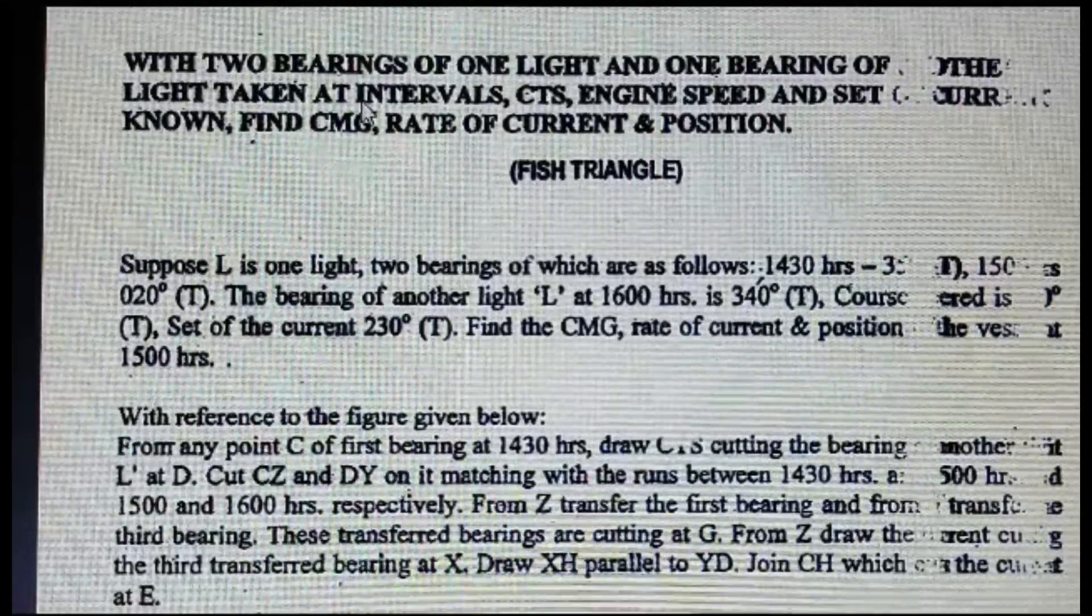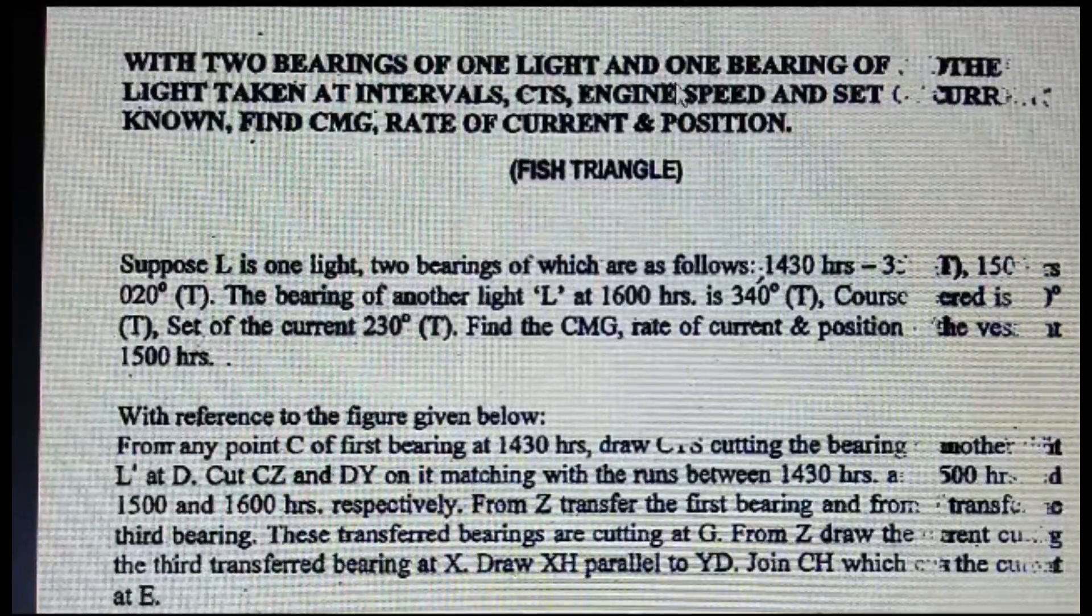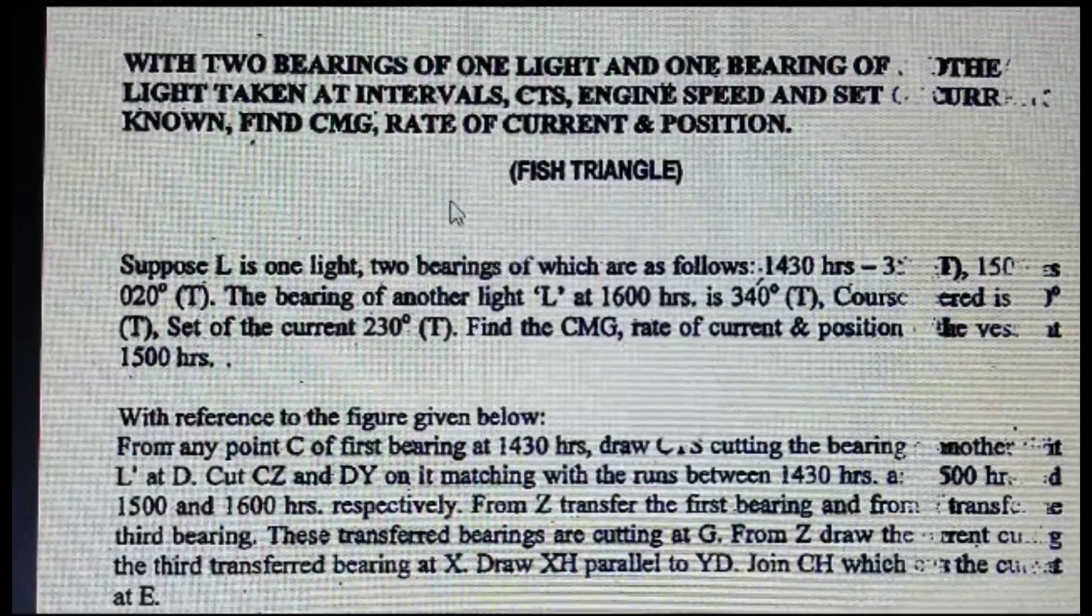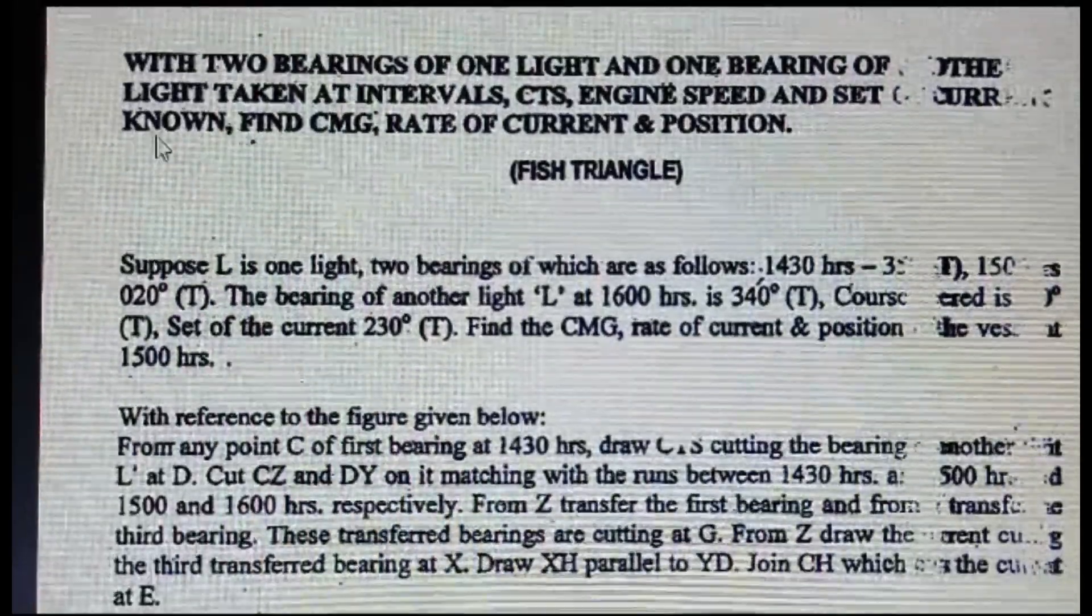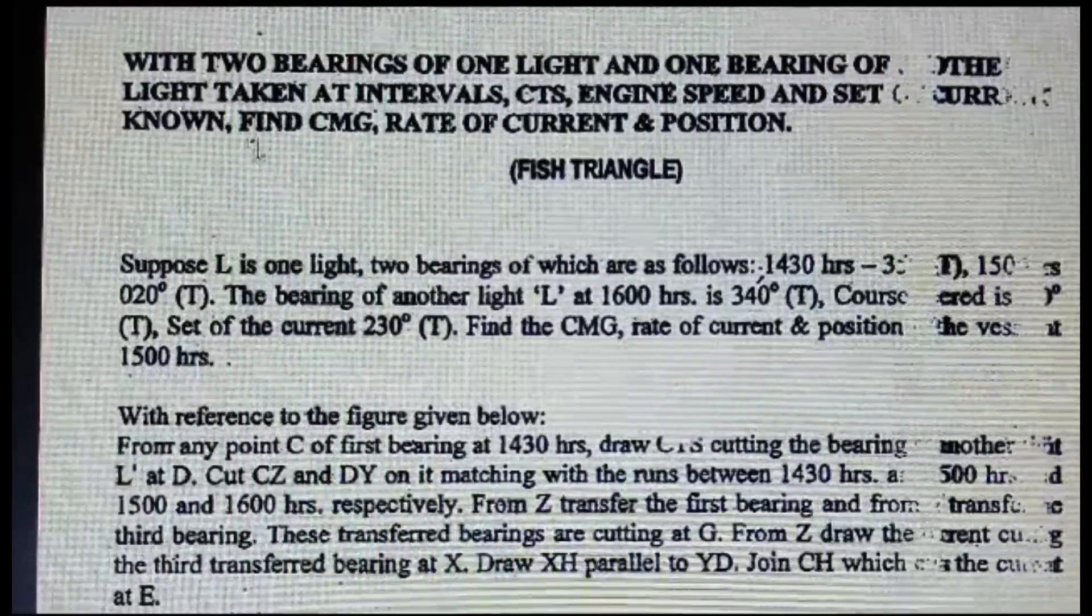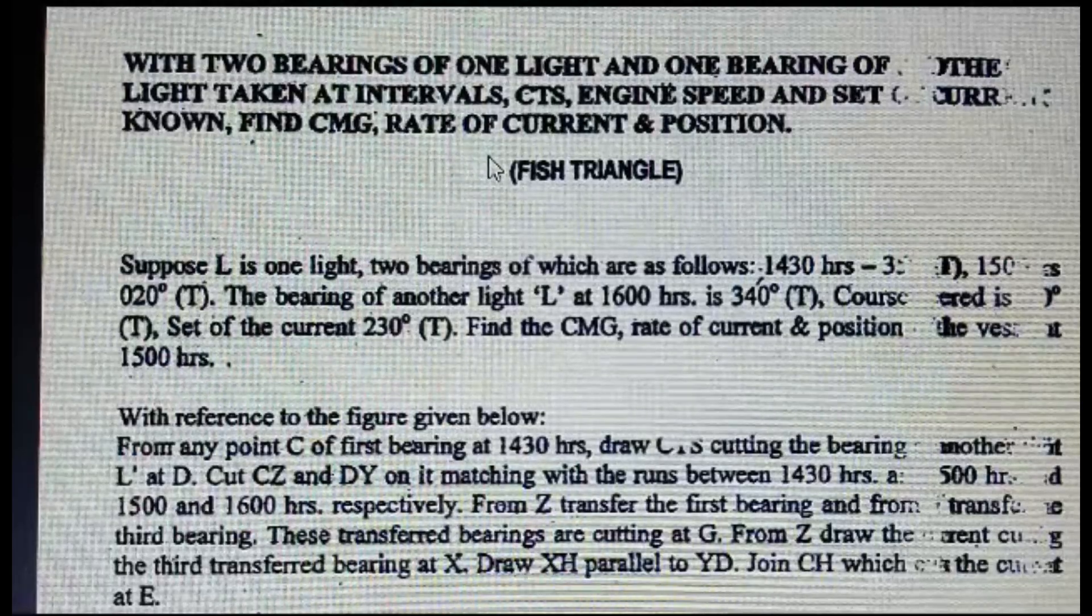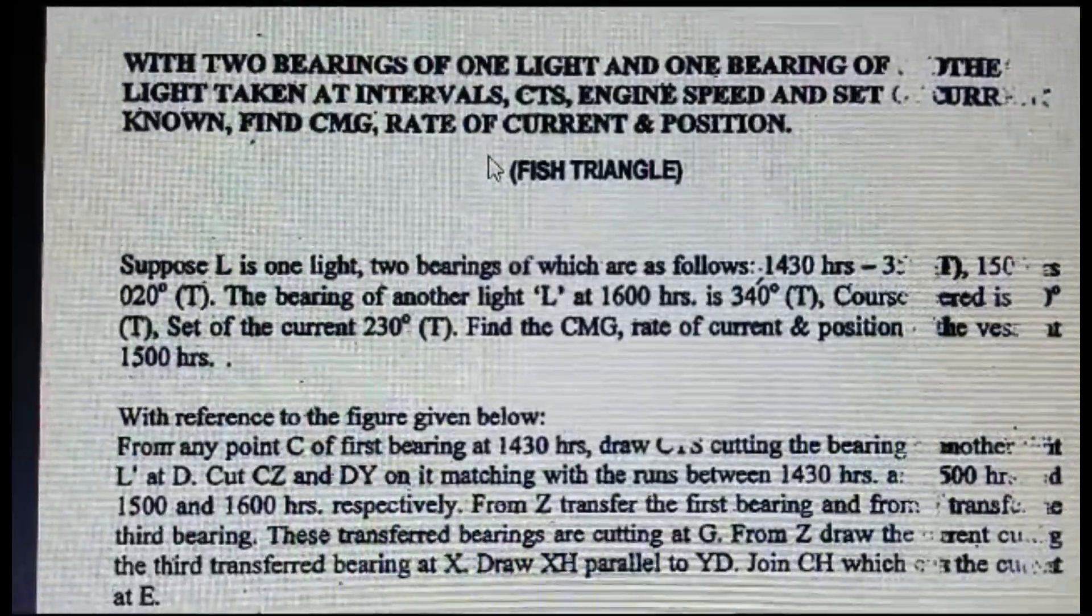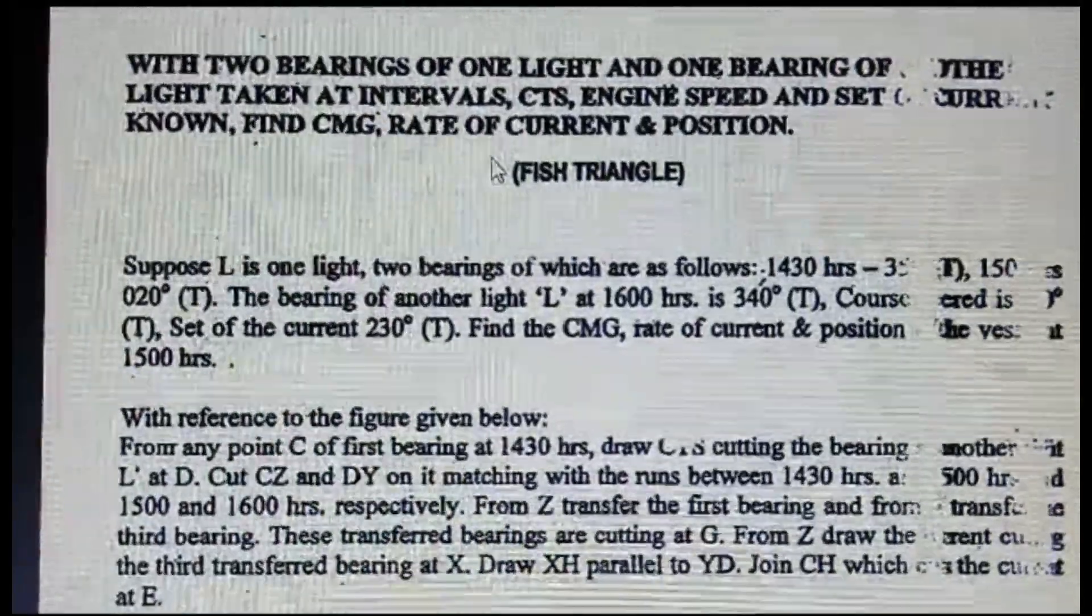At an interval will be given, your CTS will be given, engine speed will be given, and the current will be given. What you have to find in that question: you have to find CMG (course made good), rate of current, and position. So this is the basic identification of FIST triangle.